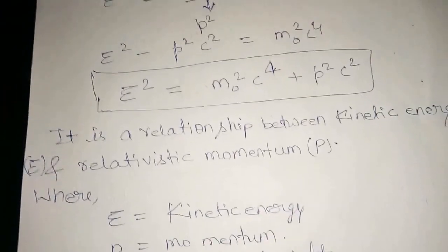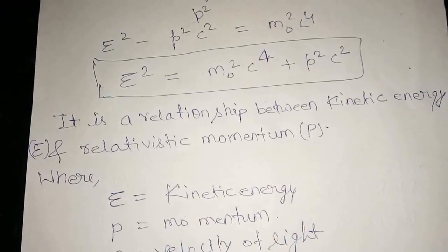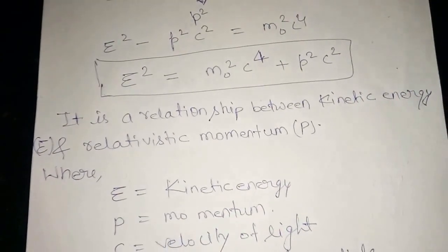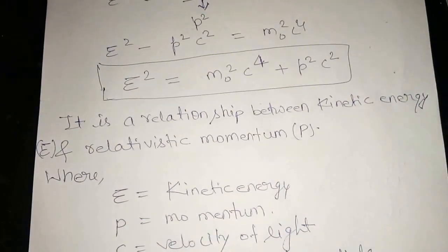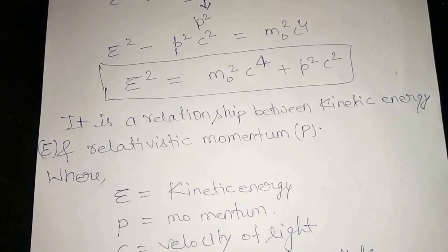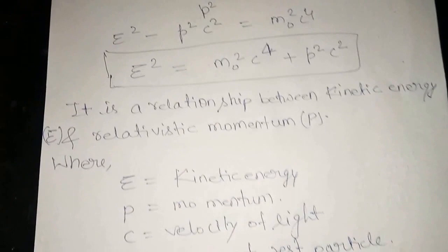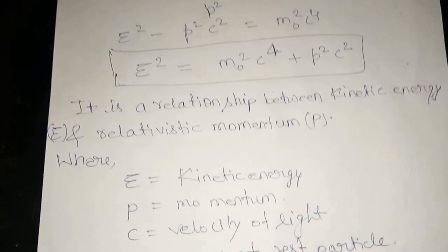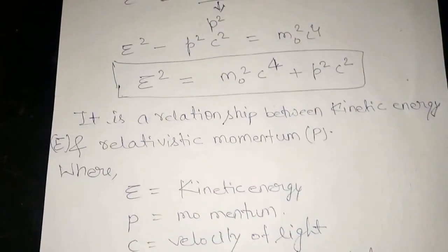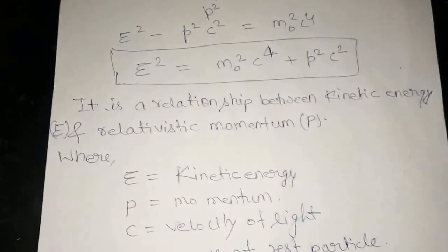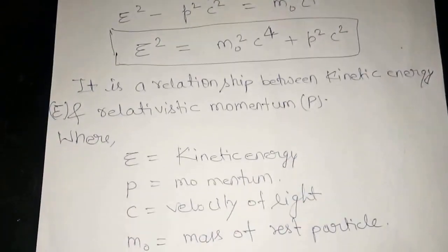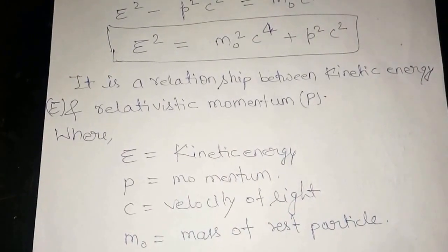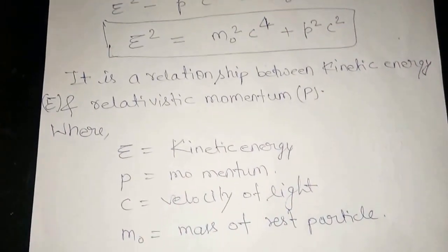This is the relationship between total energy E and momentum P, where E is the total energy, P is the momentum, c is the velocity of light, and m-naught is the rest mass of the particle.